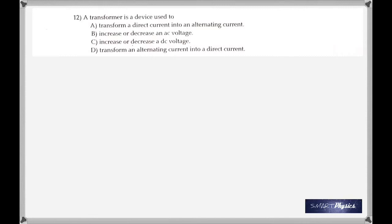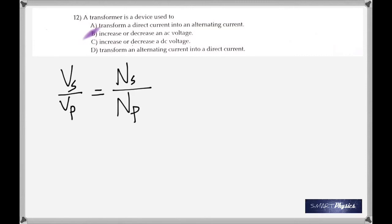A transformer is a device used to increase or decrease an AC voltage — remember, a transformer does not work with DC. The formula is: voltage in the secondary divided by voltage in the primary equals the number of turns in the secondary divided by the number of turns in the primary.